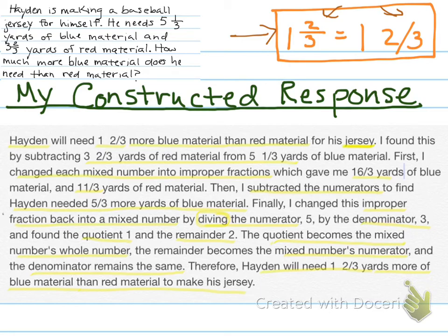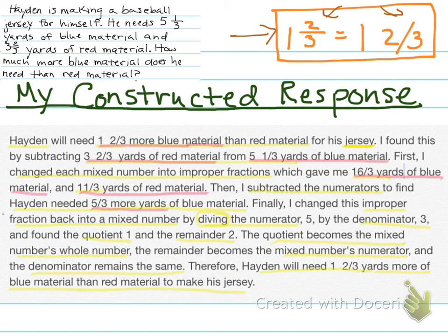Now, another thing to check for is to make sure that you've labeled all your numbers. I'm going to go through and look at all my numbers and make sure I have them labeled. 1 and ⅔ blue material; 3 and ⅔ yards red material; 5 and ⅓ yards blue material; 16/3 yards of blue material; 11/3 yards of red material; 5/3 yards more of blue material.